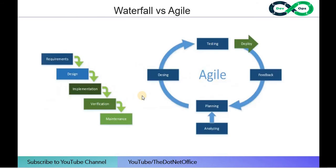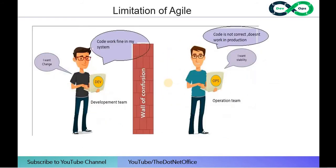The biggest advantage of Agile over waterfall is that it is a continuous process — all activities happen continuously, whereas in waterfall you can only deploy to production once everything is done. However, there are still some limitations with Agile.